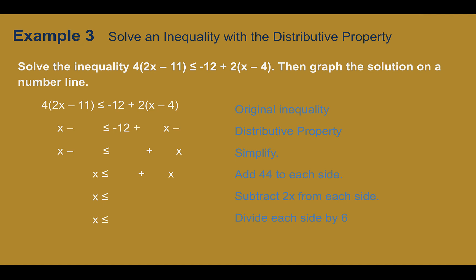Example 3. Solve an inequality with the distributive property. Solve the inequality 4(2x - 11) ≤ -12 + 2(x - 4). Then graph the solution on a number line. Going through, we can see we have sets of parentheses with a value outside. We need to use the distributive property first before we can use our addition, subtraction, multiplication, division properties. So distributing, 4 times 2x is 8x. 4 times -11 is -44. Other side, 2 times x is 2x minus 2 times 4. So 2x - 8. I'm going to simplify this side. I see there's a -12 and a -8. They're both constant numbers. So I'm going to combine them and get -20, bringing down the rest.